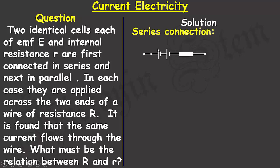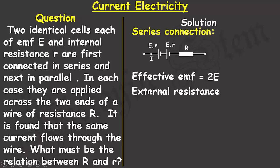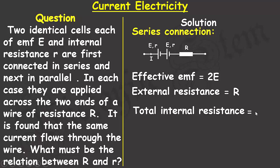First, when the cells are connected in series, it will look like what you have on the screen. The electromotive force through the first cell is capital E and the internal resistance is small r, and the same applies to the second cell. The current flowing through the circuit is I and the external resistance is capital R. The effective EMF will be the sum of the two EMFs: E plus E equals 2E.